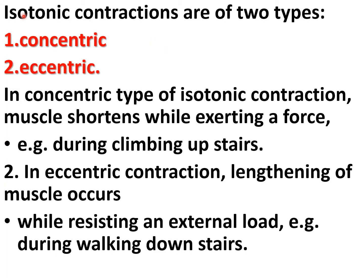Isotonic contractions are of two types: concentric and eccentric. In concentric isotonic contraction, the muscle shortens while exerting a force — for example, during climbing up stairs. In eccentric contraction, lengthening of the muscle occurs while resisting an external load — for example, during walking down stairs.